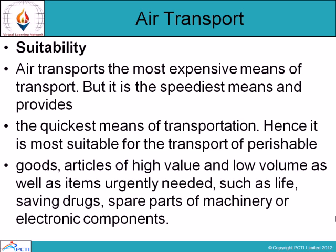For air transport, the consignor prepares an air consignment note containing all particulars of packages: method of packing, weight, quantity, volume, and freight to be paid. The air consignment note has three parts: the first part is signed by the consigner and marked for the carrier; the second part is signed by airways and the consigner, marked for the consigner; the third part is signed by airways as acknowledgment of goods received and forwarded to the consignee at the destination. Air transport follows the shortest distance and is the speediest and quickest mode of transport, saving valuable time.